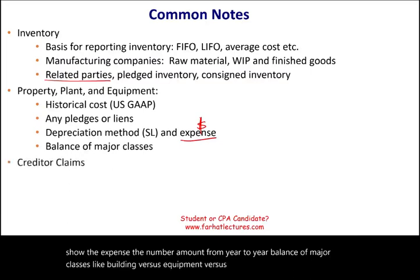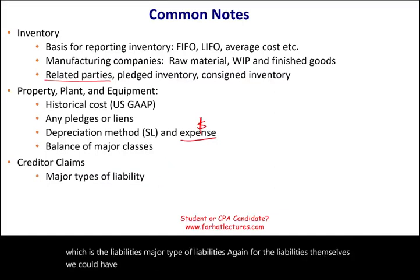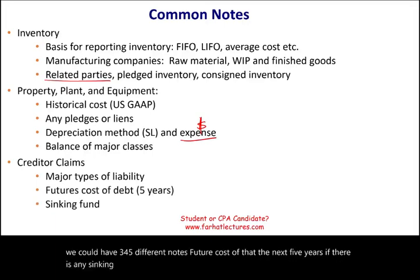For the creditors' claims — the liabilities — we disclose major types of liabilities. For liabilities themselves we could have three, four, or five different notes, including future cost of debt over the next five years, and if there's any sinking fund for the debt, we need to mention that.